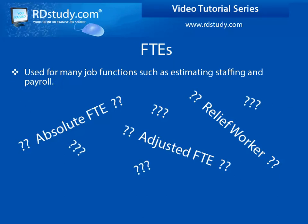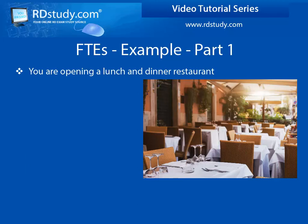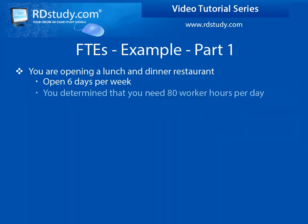Have no fear, for we will work through these terms using a straightforward restaurant example so you will have a very solid understanding of each term and how they relate to one another. You are starting a restaurant that serves lunch and dinner 6 days per week. To avoid too much detail, let's just say that you have determined that you need 80 worker hours per day.